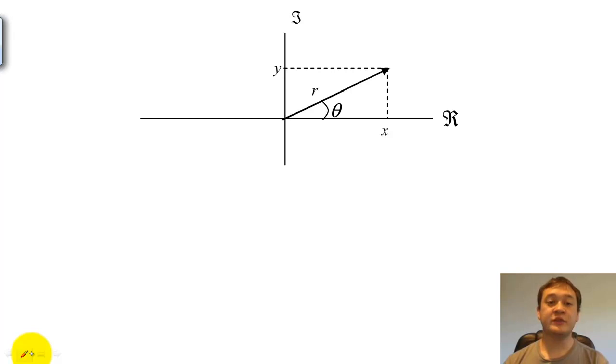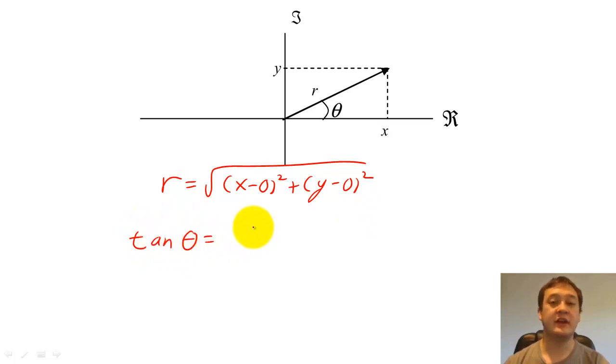We can switch between these notations by using basic trigonometry. We can calculate r by using the Cartesian distance from the origin to the tip of the arrow. We can then calculate theta by using the tangent function that relates the angle to x and y. Remember, the tangent is the opposite of the angle over the adjacent side. Now that we have the tangent, we use the arctangent function to complete the calculation.